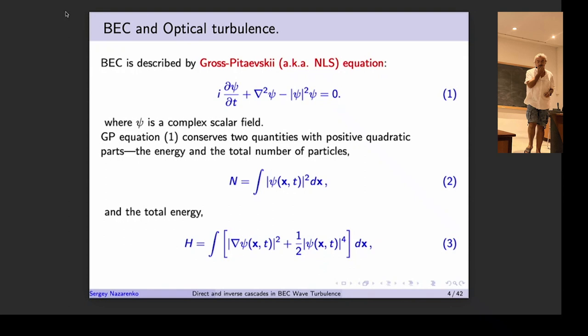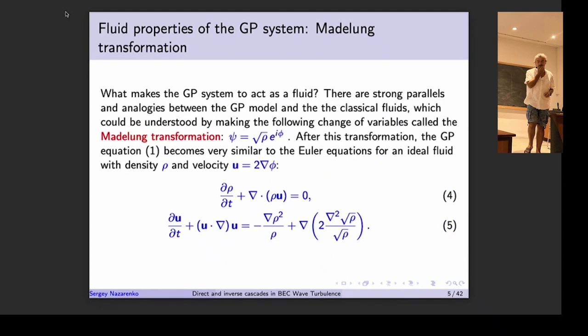What BEC and optical systems have in common is the basic nonlinear wave equation — the Gross-Pitaevsky equation, also known as the nonlinear Schrödinger equation — written for a complex scalar field. If you drop the nonlinear term, it reduces to the usual Schrödinger equation from quantum mechanics. Important for us is that it has two conserved quantities: number of particles and energy, represented by the linear (Laplacian) term and the interaction Hamiltonian.